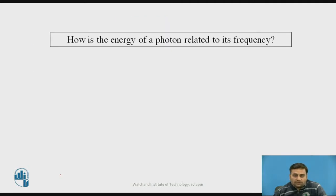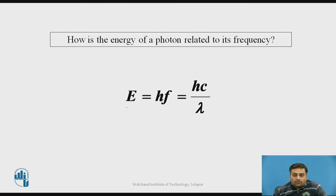Here you may pause the video and try to find out the answer to this question: How is the energy of a photon related to its frequency? We know the formula for energy of a photon is E equals Hf, where H is Planck's constant and F is the frequency of a photon. So we can say that energy of a photon E is directly proportional to its frequency F.